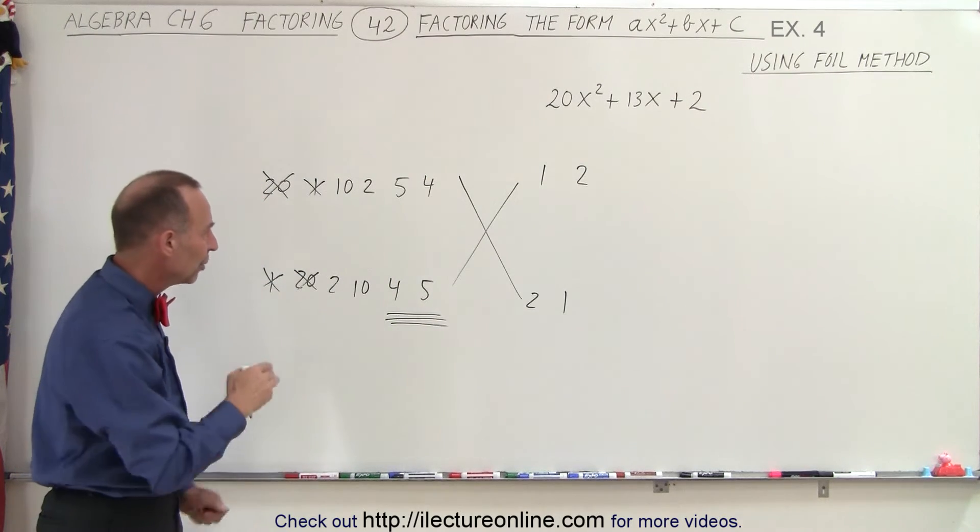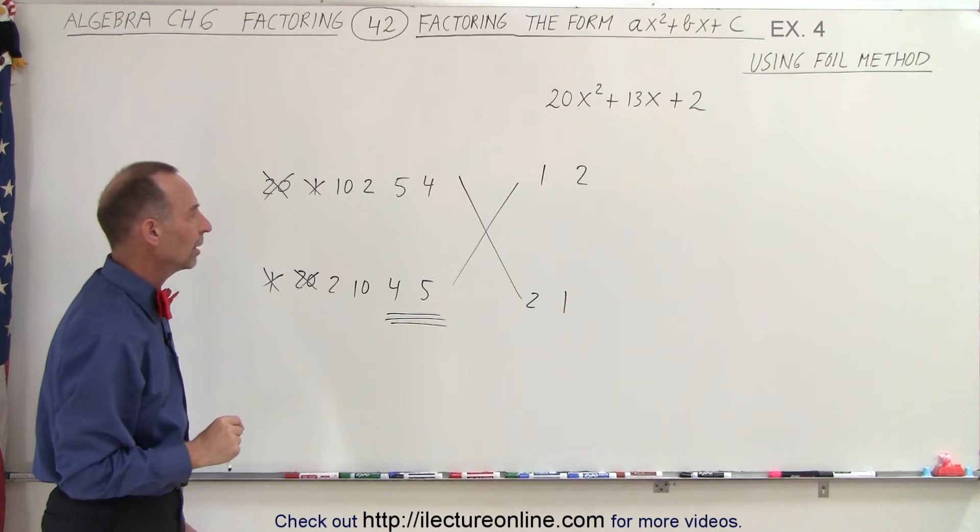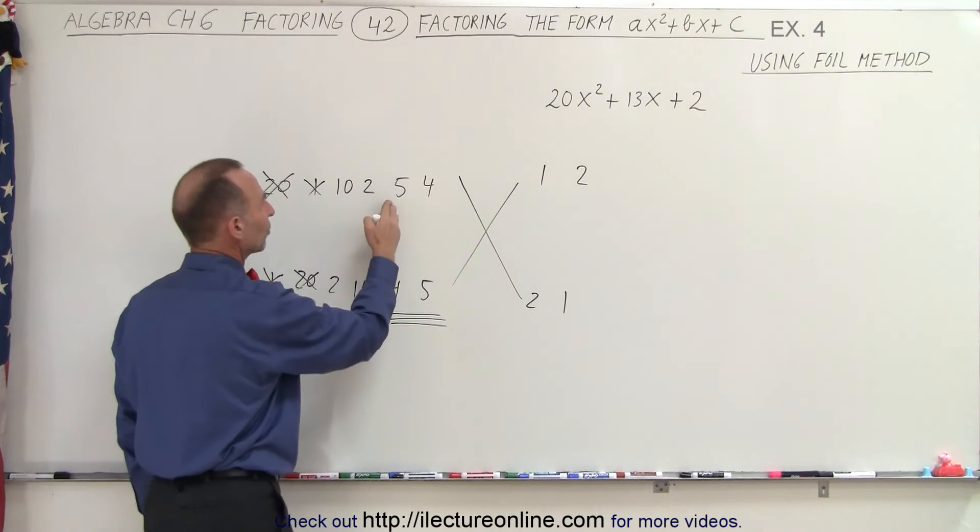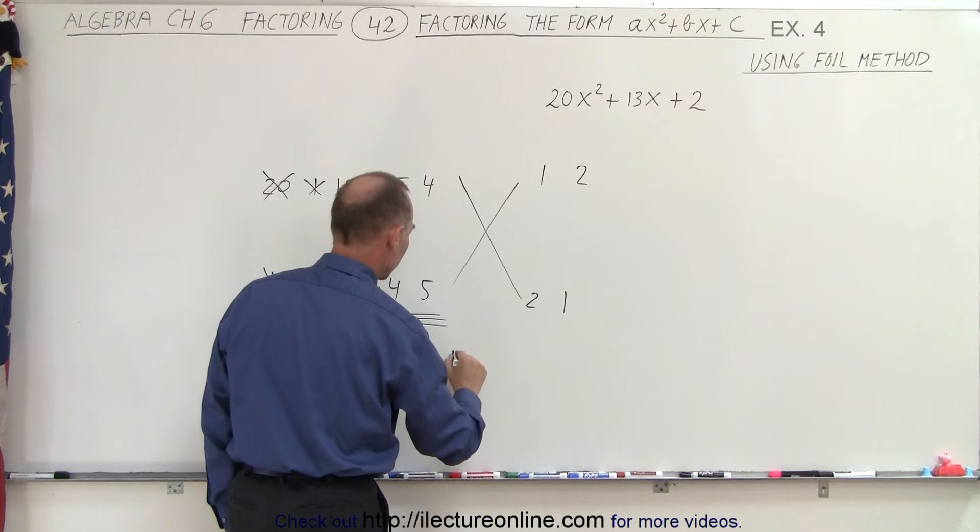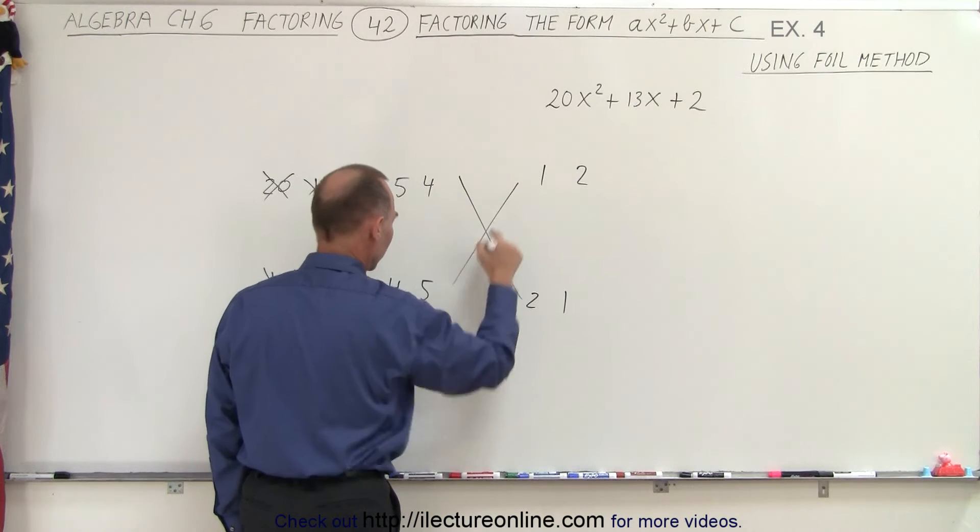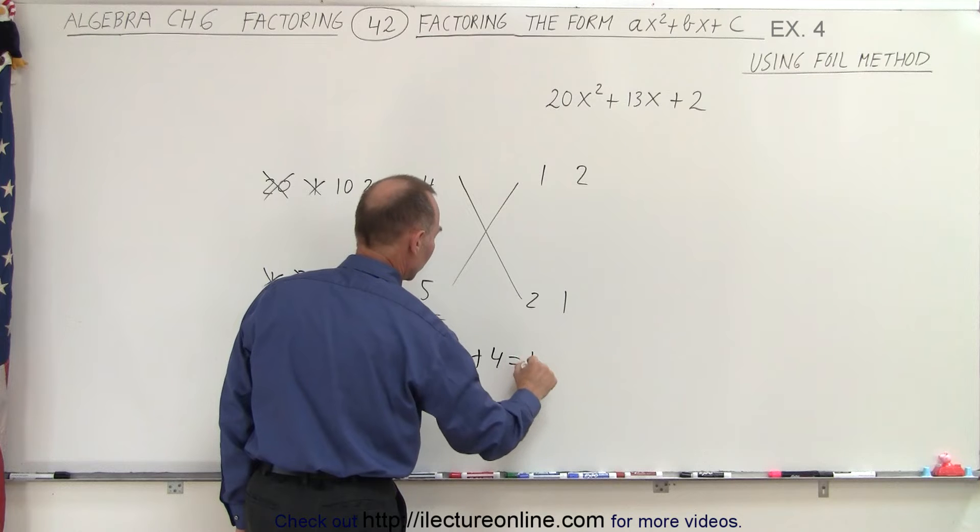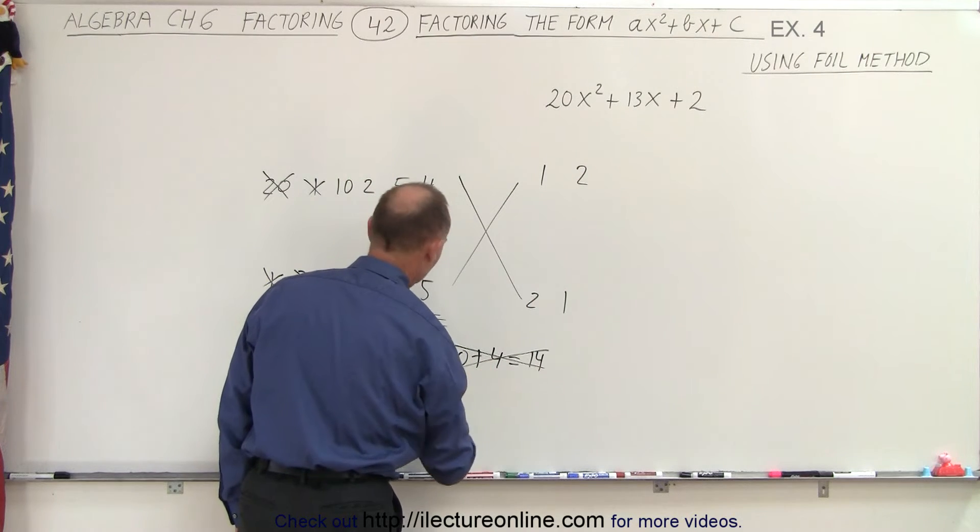So right away with some quick thinking you can eliminate a lot of the possibilities. So let's go ahead and try these right here. 5 times 2 gives me 10. 4 times 1 that's 14, so it's not equal to 13, so I don't need that.